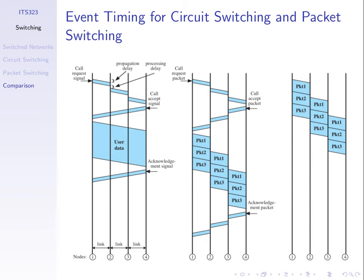One thing we care about is the timing — which approach takes more time to transfer the same amount of data. With packet switching, we take the data and break it into smaller packets. With circuit switching, once we establish a circuit, those links are reserved for that data transfer and no one else can use them. This is wasteful if we reserve the link but don't transmit data, for example when the computer at node one has nothing to send — all that idle time wastes reserved links.